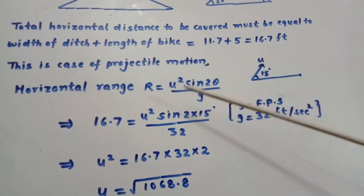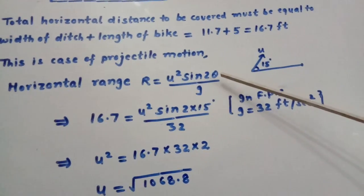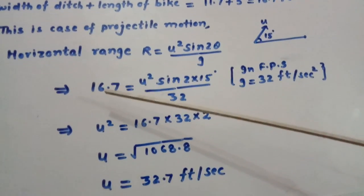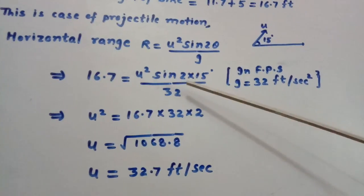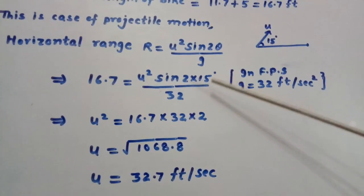We put the values: 16.7 equals U squared sine 2θ divided by g. Theta is 15 degrees and g is 32 feet per second squared.